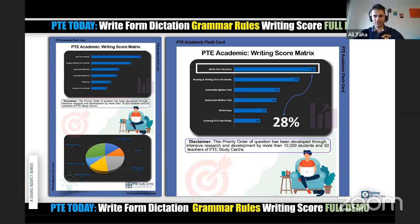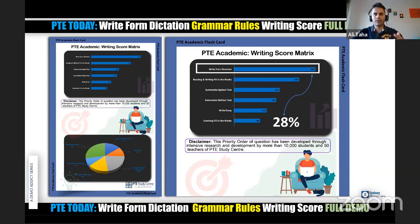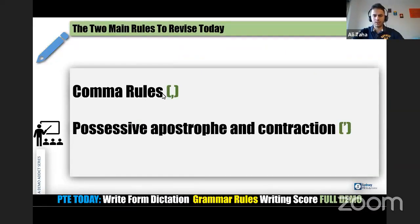Write From Dictation contributes to both listening and writing. If you apply what was discussed yesterday for the listening part, you are securing your listening score. But from the writing perspective, on top of spelling which you need to perfect, there are some aspects — if you're not aware of them, they may affect your writing score. Today we are discussing three aspects: comma rules, possessive apostrophe, and contraction.